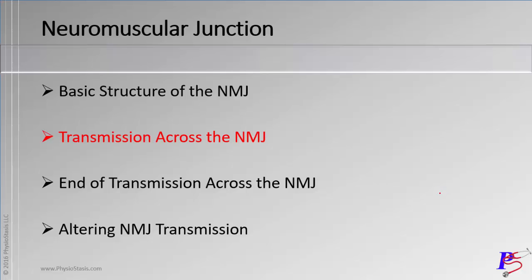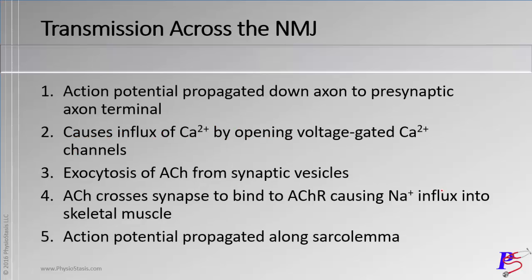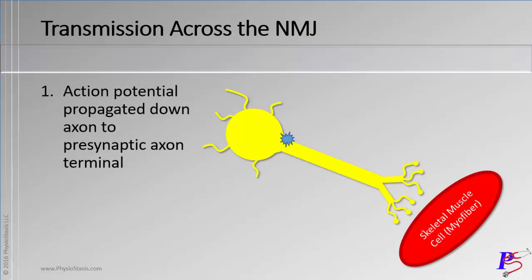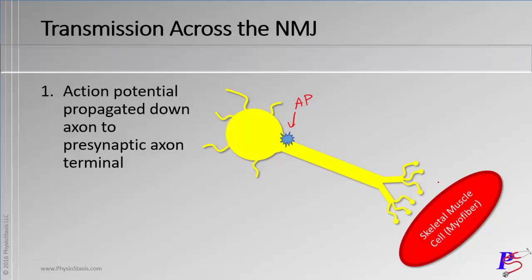Let's talk about transmission as it goes across this synapse. There is a series of five steps we'll walk through. We'll start with the action potential as it makes its way down the axon, ending as it reaches the plasma membrane of the muscle cell. Step one: the action potential propagates down the axon to the axon terminal.